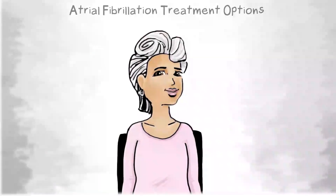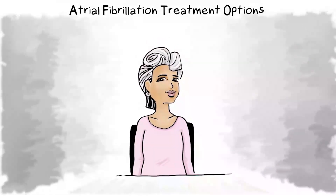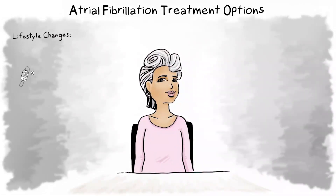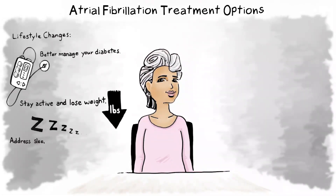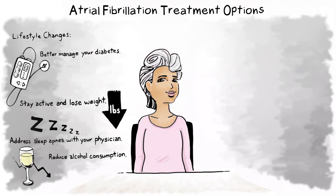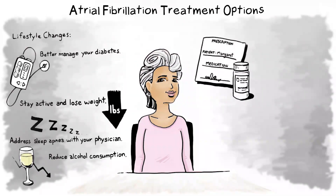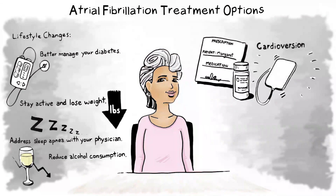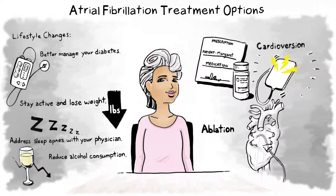Atrial fibrillation can be treated several ways: make lifestyle changes, take medications to control heart rate and rhythm, cardioversion — which seeks to restore normal heart rhythm through a controlled electric shock to the outside of the chest — and ablation, which creates lesions on the inside or outside of the heart to stop atrial fibrillation. We will discuss the two types of ablation in just a moment.